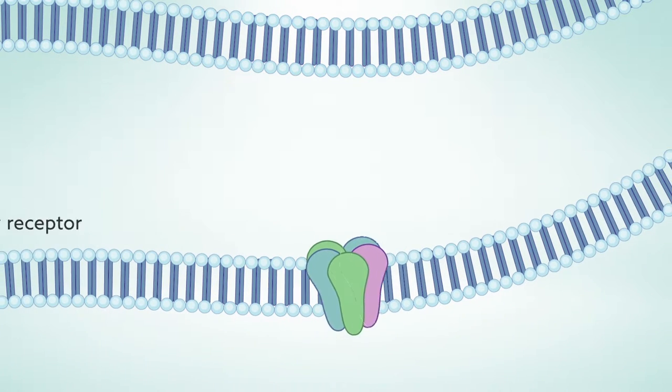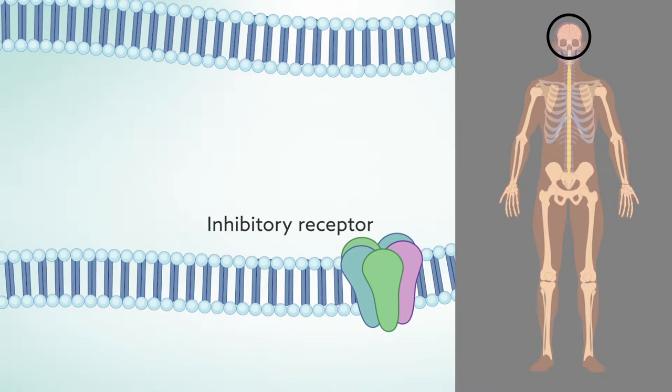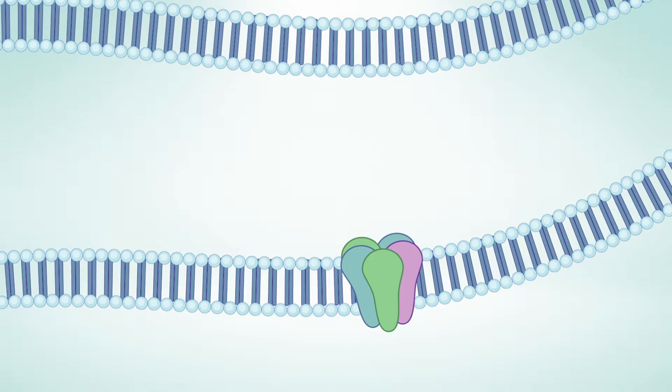Many general anesthetics work in part by boosting the activity of inhibitory receptors in the brain and spinal cord. These receptors are tiny channels that respond to the neurotransmitter GABA.